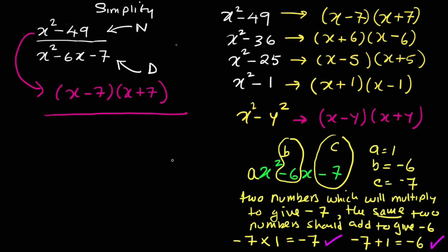Now how do we now factorize? So we do x minus 7, x plus 1. So how can we simplify? These two x minus 7, x minus 7. And then we're left with x plus 7, x plus 1. And that's your answer.